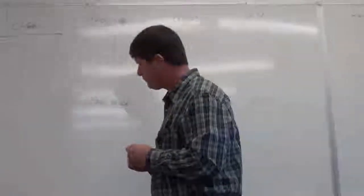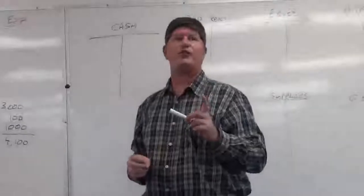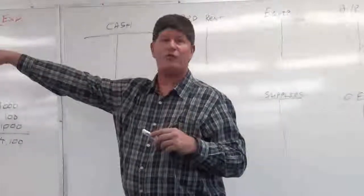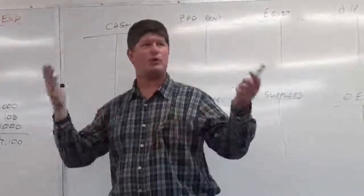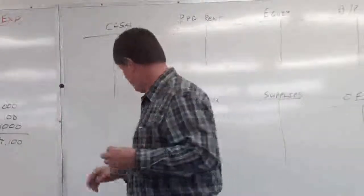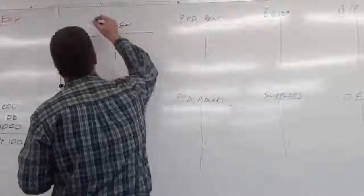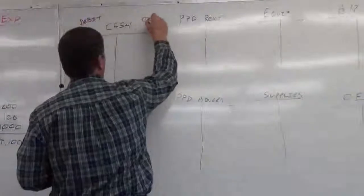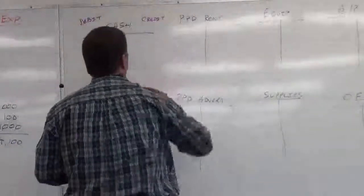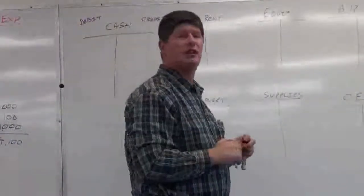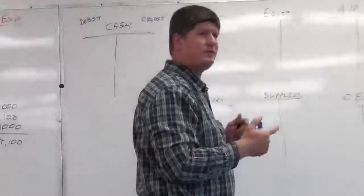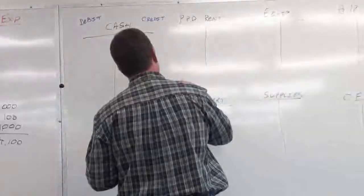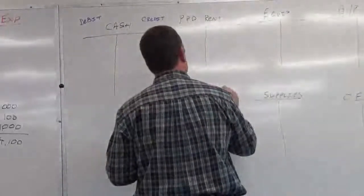What was our very first transaction? We put $50,000 in to start the company. Debit is always on which side? Left. Credit is on which side? Right. The abbreviation for debit is DR; the abbreviation for credit is CR.